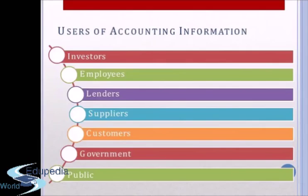Lastly, the Public at Large is interested in knowing the financial position of the enterprise because the business affects the economy in many ways — employing many people and supplying goods to many customers. So the public at large is interested in the financial position and functioning of the enterprise through accounting information. In summary, the users of accounting information are: Investors, Employees, Lenders, Suppliers and Creditors, Customers, Government and their agencies, and the Public at large.